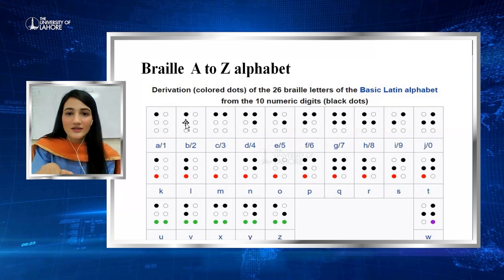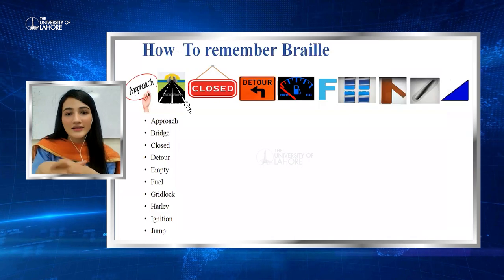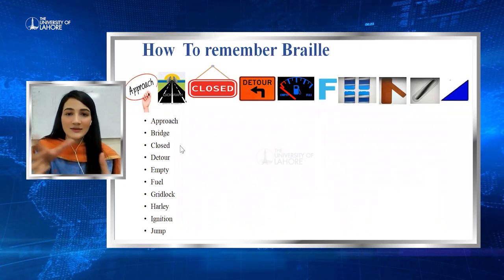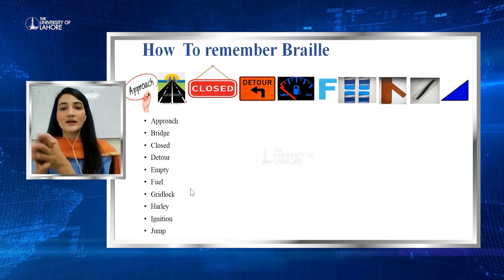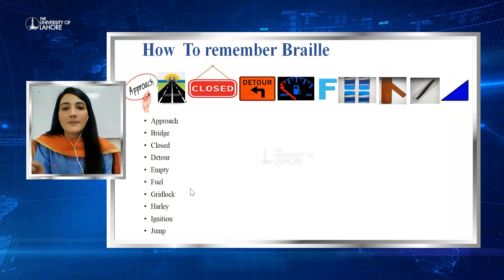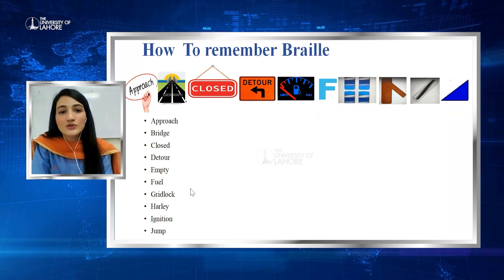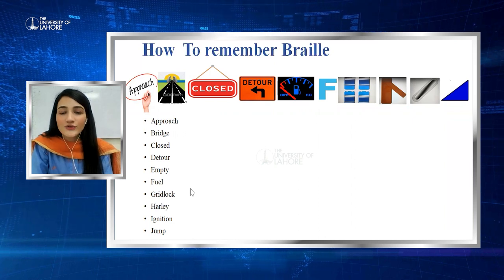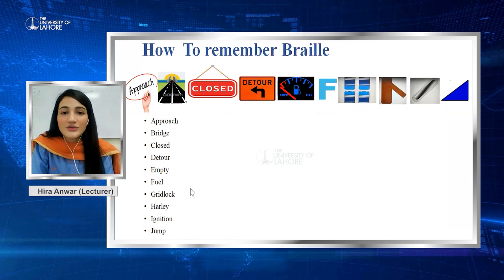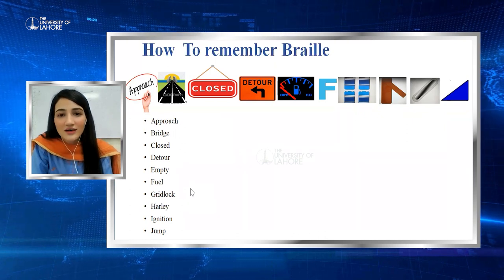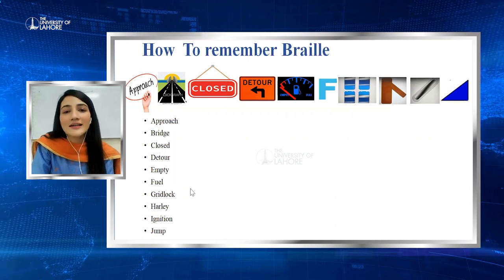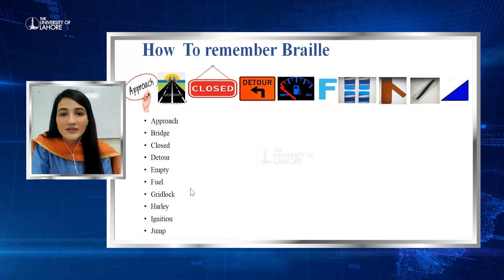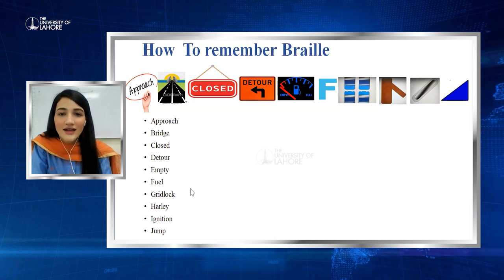To help remember the patterns, here is a simple story to remember: One day you want to cross a river. You approached a bridge but it's closed. You take the detour but now you are on empty. You fill up fuel and now you are on gridlock. You change the car for a Harley, turn the ignition on and jump over the river. Highlight these words: approach, bridge, closed, detour, empty, fuel, gridlock, Harley, ignition, and jump.